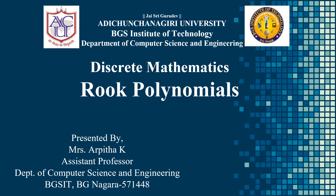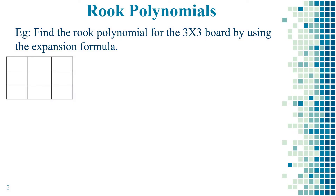Hello everyone. In this video, let us discuss one more example to solve the rook polynomial by using the expansion formula. Consider the example: find the rook polynomial for the 3×3 board by using the expansion formula. In the previous video we found the rook polynomial for the 2×2 board, and in this example we have the 3×3 board, so we use the same procedure.